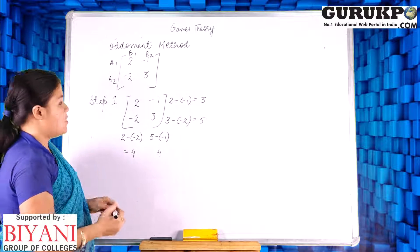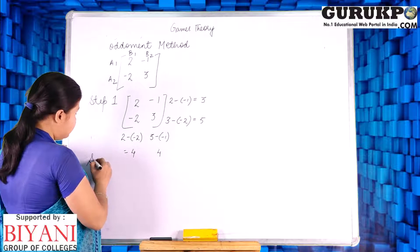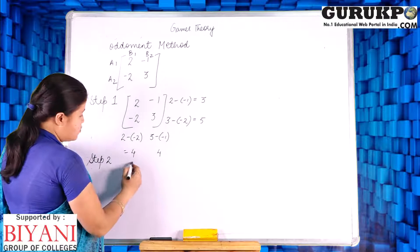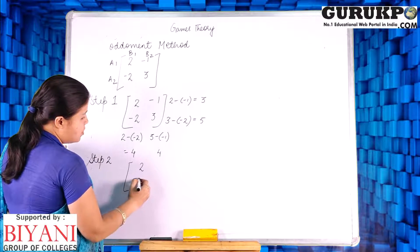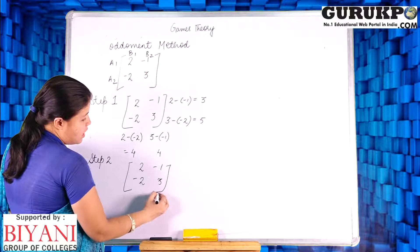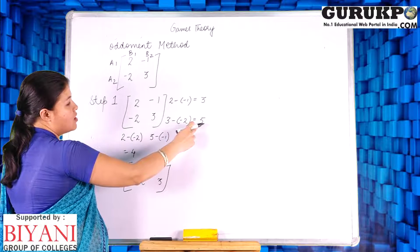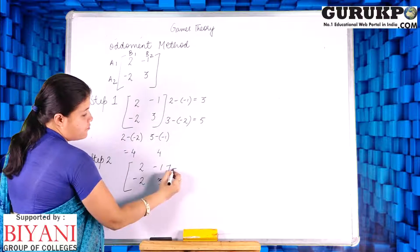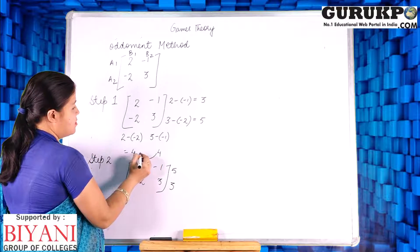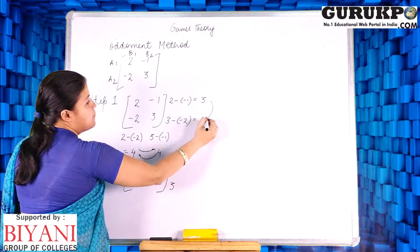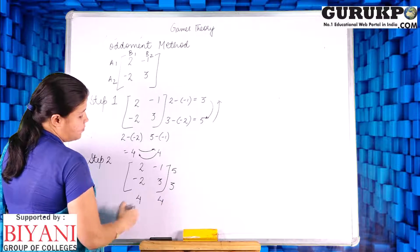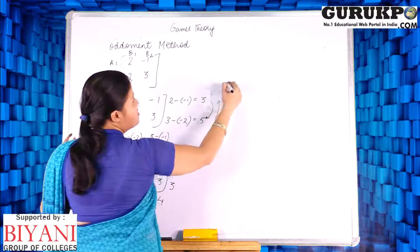The second step is to interchange the values. That is, 2, −2, −1, 3 — we interchange them. Here the values become 5 and 3, and again 4 and 4.